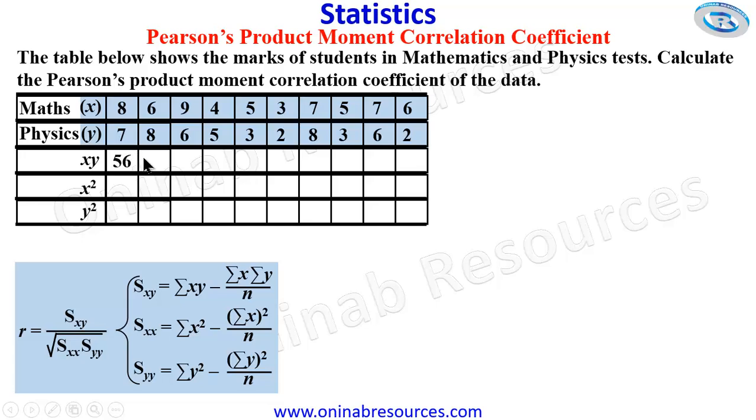So 8 times 7 gives 56. This is 48. You multiply 9 and 6, giving 54. This is 20. This is 15, 6.